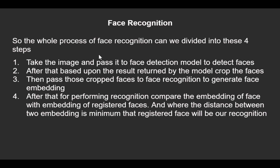The whole process of face recognition can also be divided into four steps. The first three steps are identical to face registration: take the image and pass it to the face detection model, crop the faces, then pass them to the face recognition model to generate embeddings. The fourth step differs: instead of storing a name, we compare the embedding with all registered face embeddings, and the registered face with the minimum distance is our recognition.